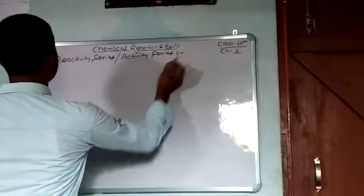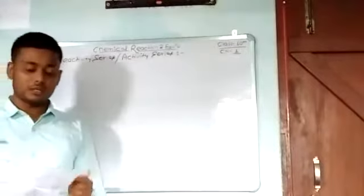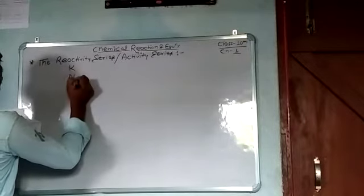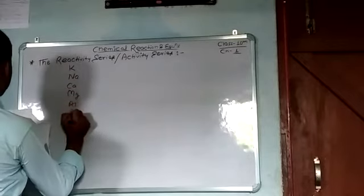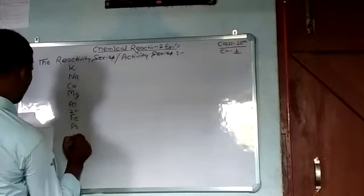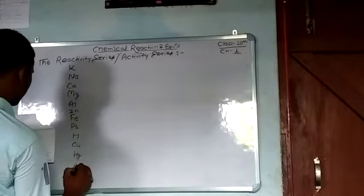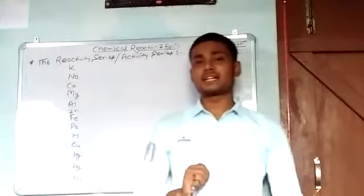Let us see how we can determine that given elements are more or less reactive compared to one another. For this we have a series. The elements in the series are: Potassium, Sodium, Calcium, Magnesium, Aluminium, Zinc, Iron, Lead, Hydrogen, Copper, Mercury, Silver, and Gold. This is the arrangement of elements on the basis of their reactivity.